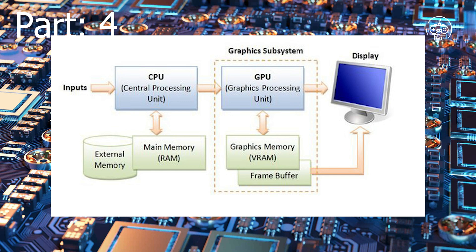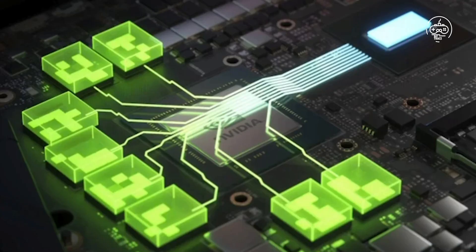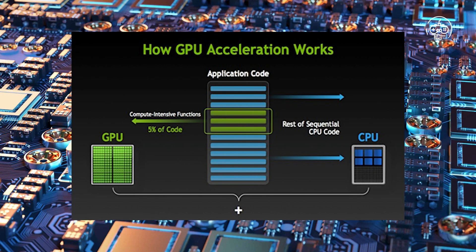What actually uses VRAM? The frame buffer used for monitor display occupies a tiny amount of the graphics card's memory, with a 4K HDR image occupying around 50MB of VRAM. This low consumption is why graphics cards whose only purpose is to drive displays don't need large amounts of VRAM for workloads such as word processing or simple browsing.